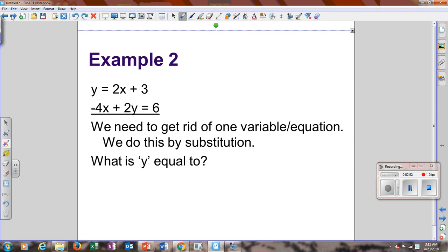Second example. Y equals 2x plus 3. We know the y is by itself, so we're going to substitute. So we're going to get negative 4x plus 2 times 2x plus 3 equals 6. Let's get negative 4x plus 4x plus 6 equals 6. Then your x's cancel out. And you're just left with 6 equals 6.